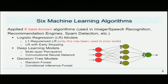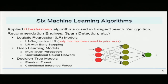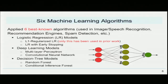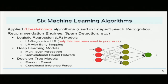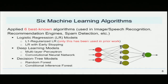We applied the six best known machine learning algorithms, which have been used successfully and extensively in many other fields such as image and speech recognition. These six algorithms can be broadly classified into three types: the two logistic regression models were the L1 regularized and early stopping models; the two deep learning models were the multi-layer perceptron and convolutional neural network; and the two decision tree models were the random forest and conditional inference forest.